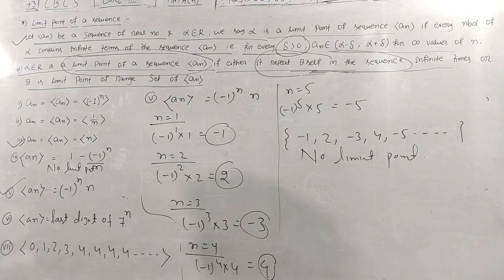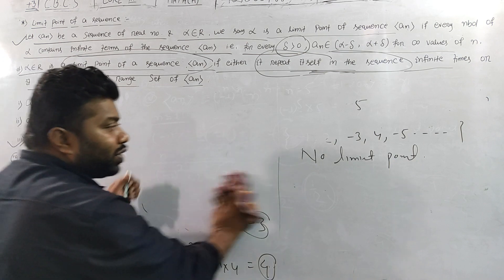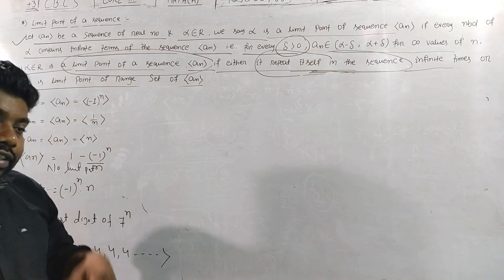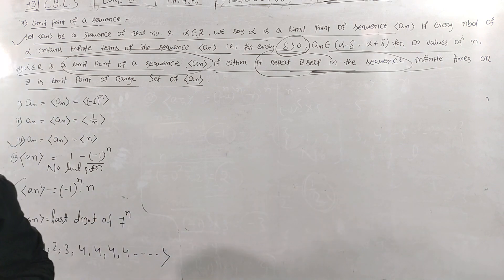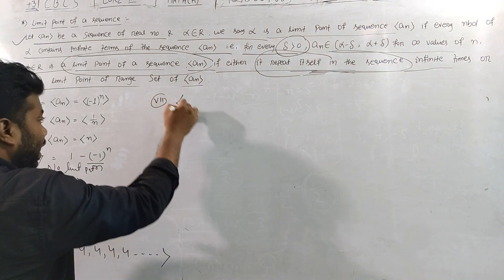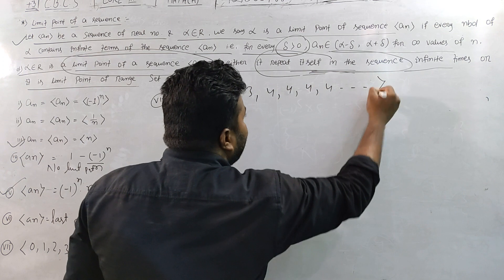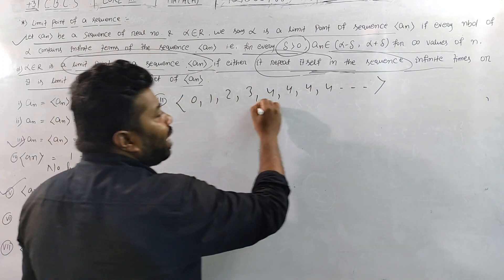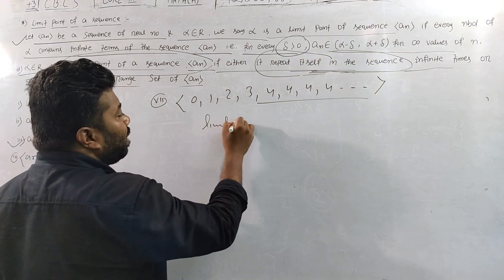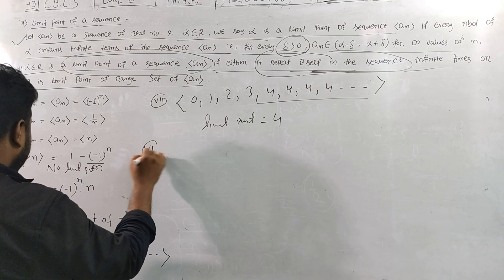There is no limit point for this sequence. I hope the concept of limit point is now clear. Next we discuss bounded sequence, unbounded sequence, convergence, divergence, and oscillatory sequences. For example, a sequence with the number 4 repeated infinitely many times has limit point 4.